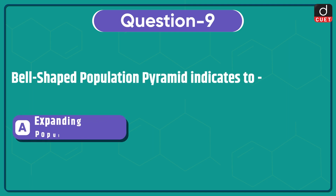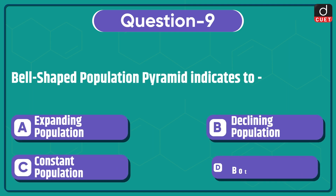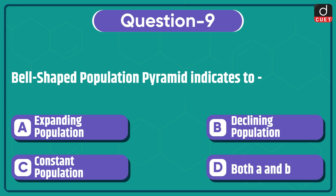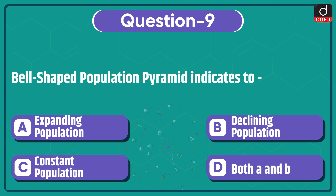Next question: a bell-shaped population pyramid indicates — expanding population, declining population, constant population, or both A and B? The correct answer is option C, constant population.